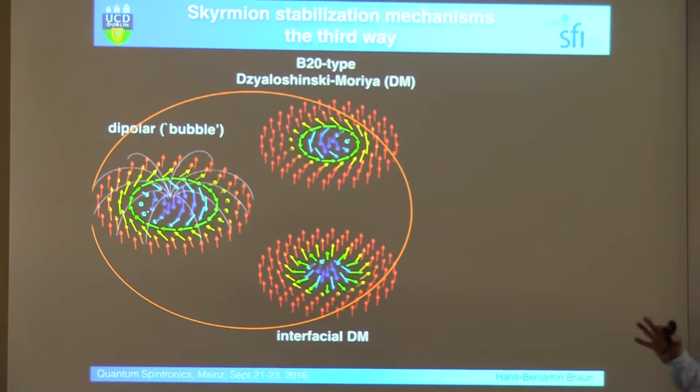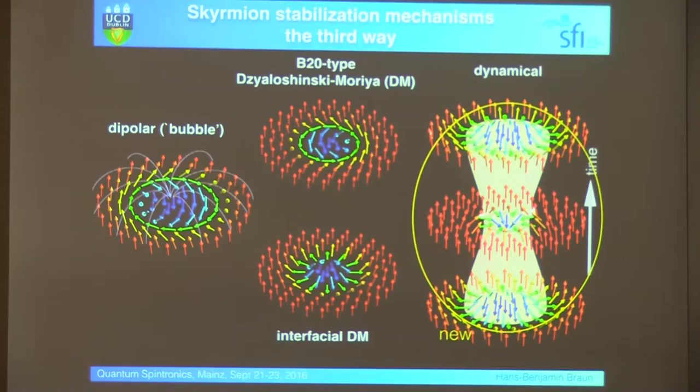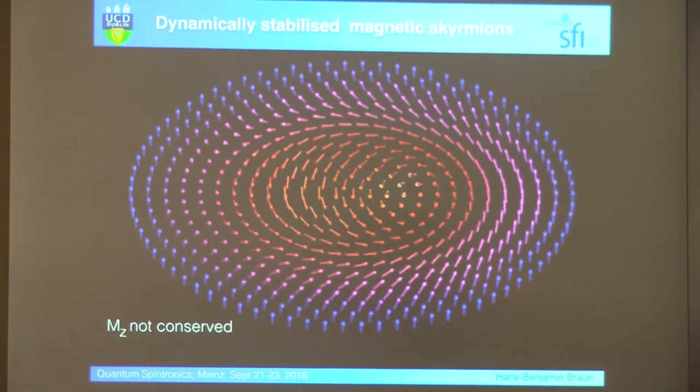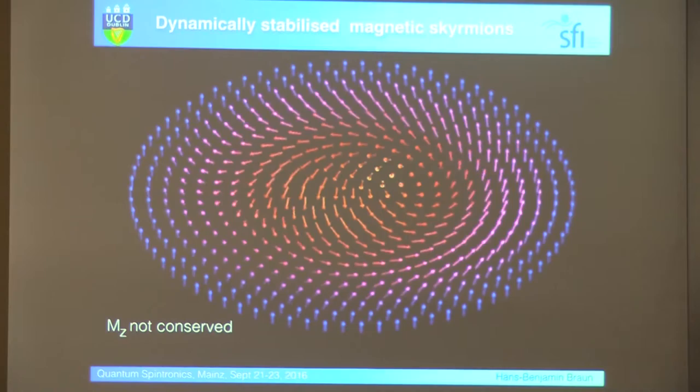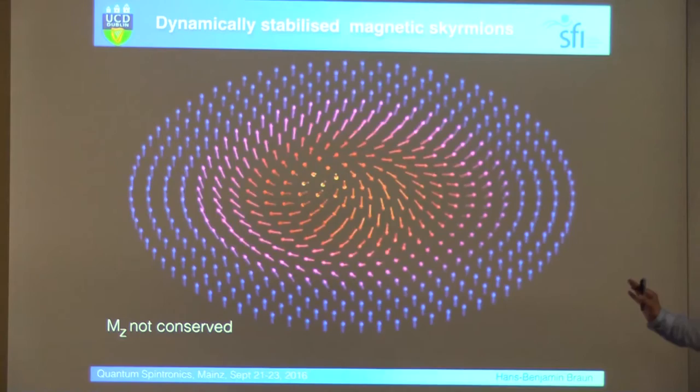Now, there is another way to stabilize a skyrmion, and that's another, sort of, not conventional thing, is another way, namely, you can do that dynamically. And I want to show you how that works, so first, a movie, because you get sort of a flavor of that, so the skyrmion, the spins precess, the skyrmion breathes, and interestingly, you do not need DMI, you do not need dipole interaction, this is a purely dynamical object.